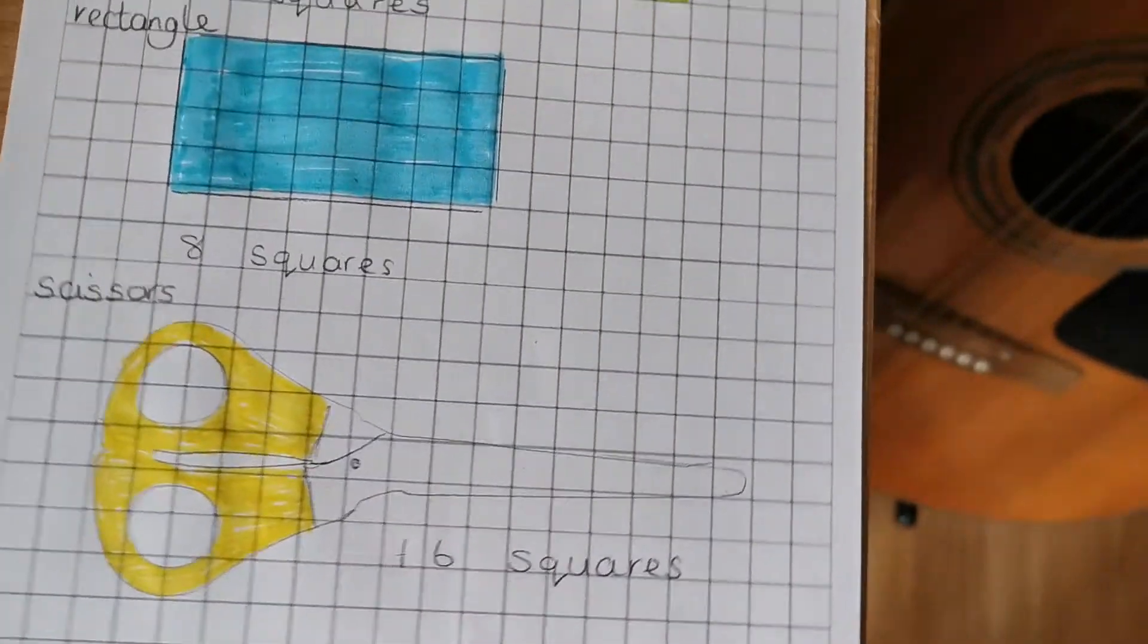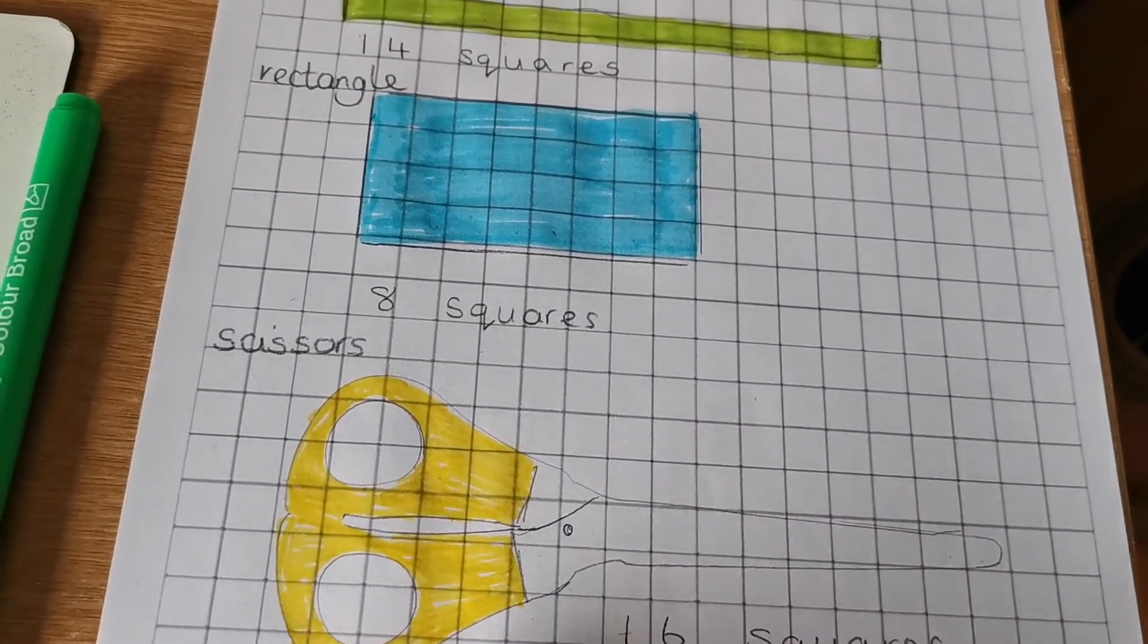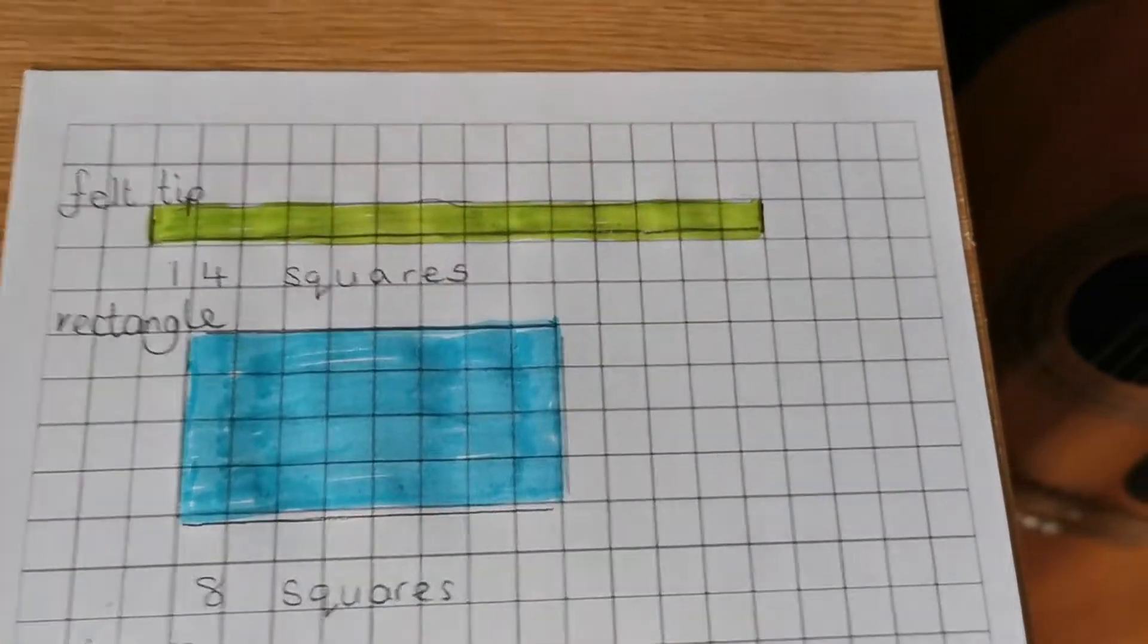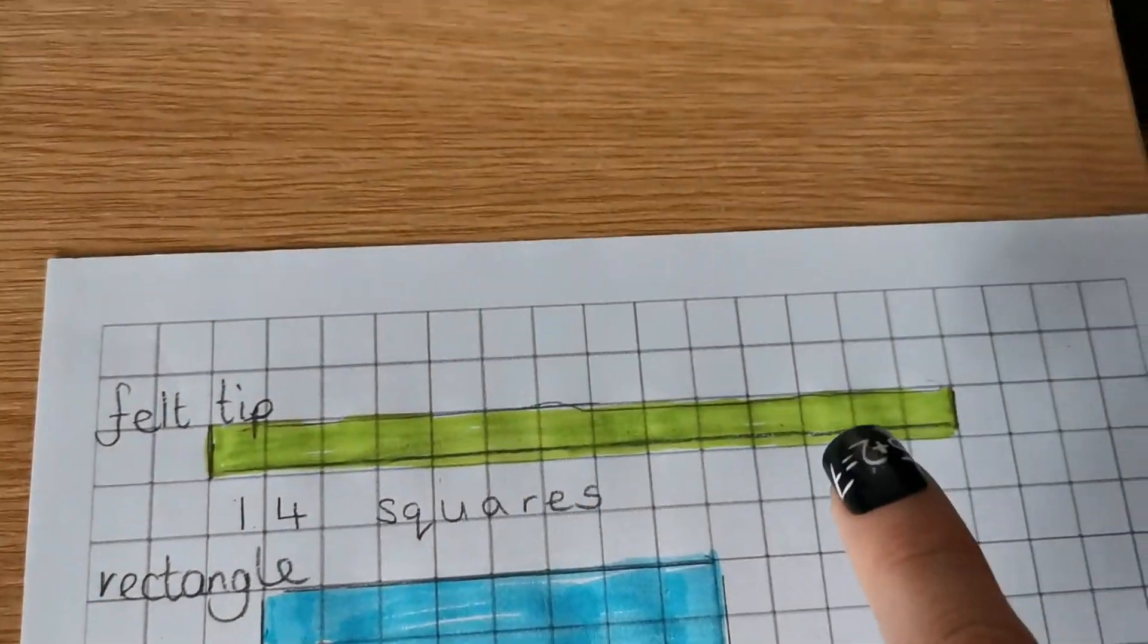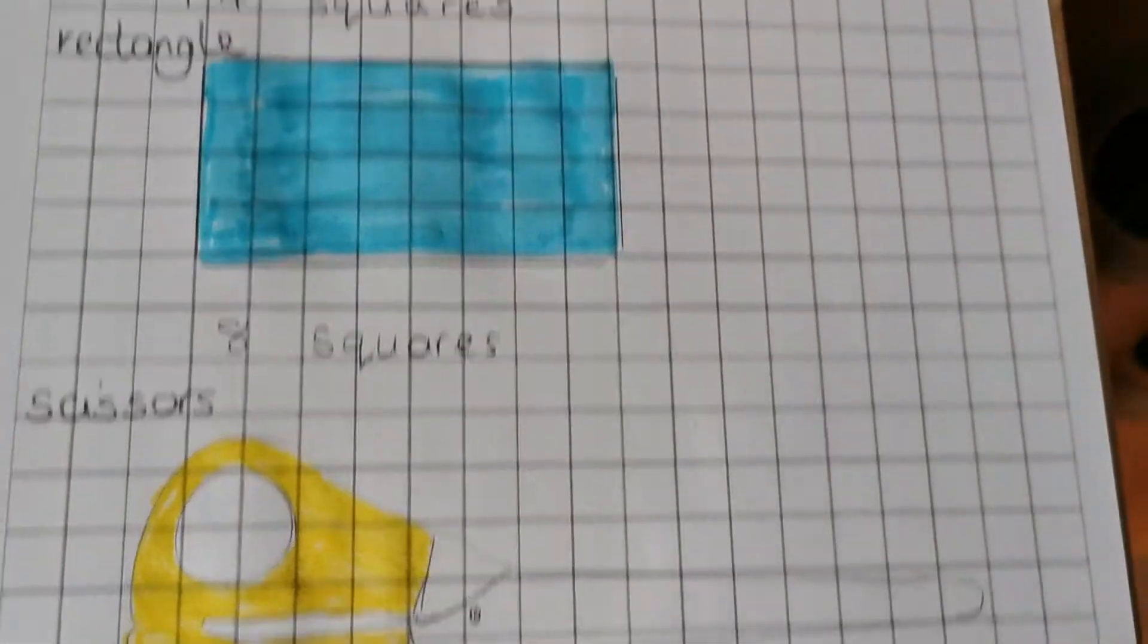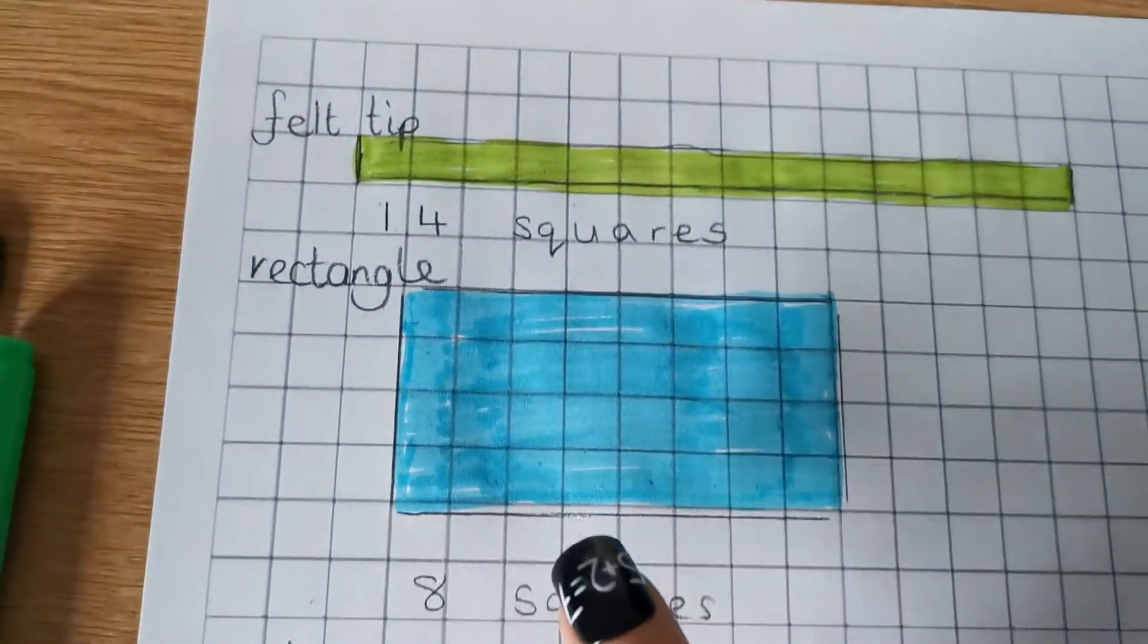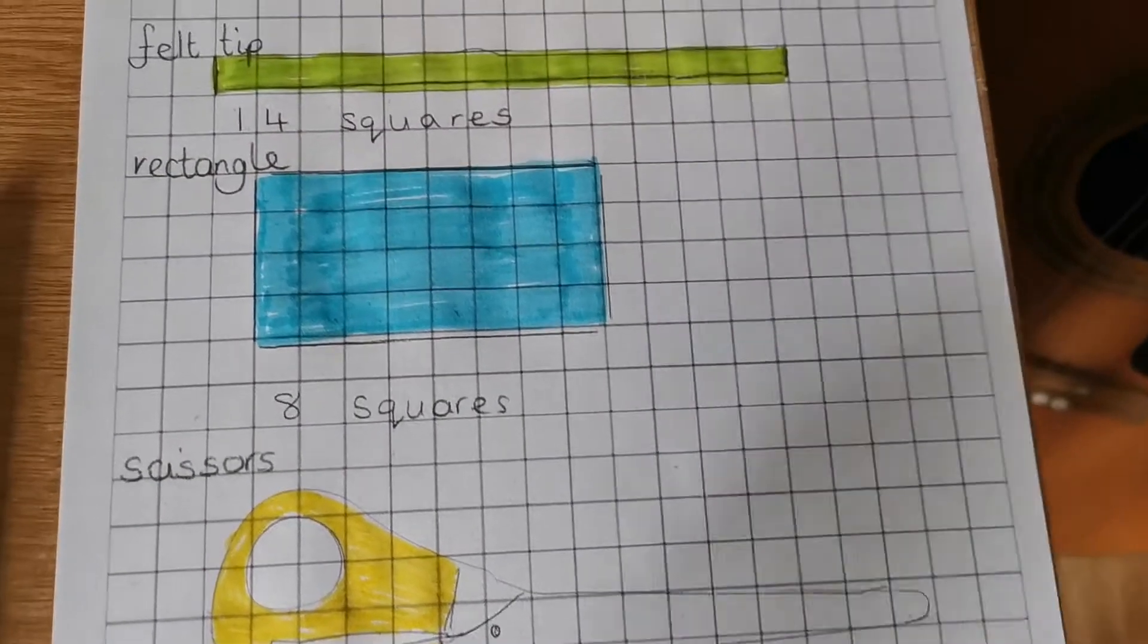Now, it doesn't matter, like I said, what you use as long as they're all the same size. And you use the same things to measure all of whatever it is you're measuring. To measure everything, you use the same units. So either squares or cubes or whatever you've got at home. Lego bricks that are all the same size. Because then you can see, by looking at the numbers,